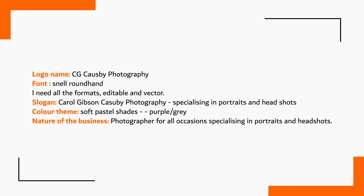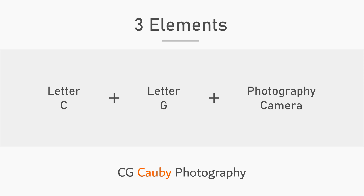The name of the logo is CG Caused by Photography and the font they want to use is Snell Roundhand, and it has a very lengthy slogan. To generate the logo design idea, my major focus is on three elements: letter C, letter G, and photography. For photography I am going to use a camera. This is the logo I designed using these three elements — it looks like a simple camera but it isn't.